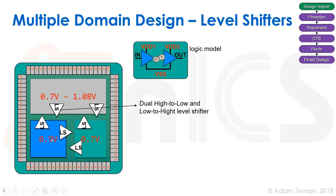Things get tricky because shifting from 0.7 to 0.9 volts is an upshift, while going from 0.9 to 1.08 volts is an upshift in the other direction. We need a logic model for these buffers that sit between domains — essentially two inverters where the input is connected to one VDD and the output to a different VDD.